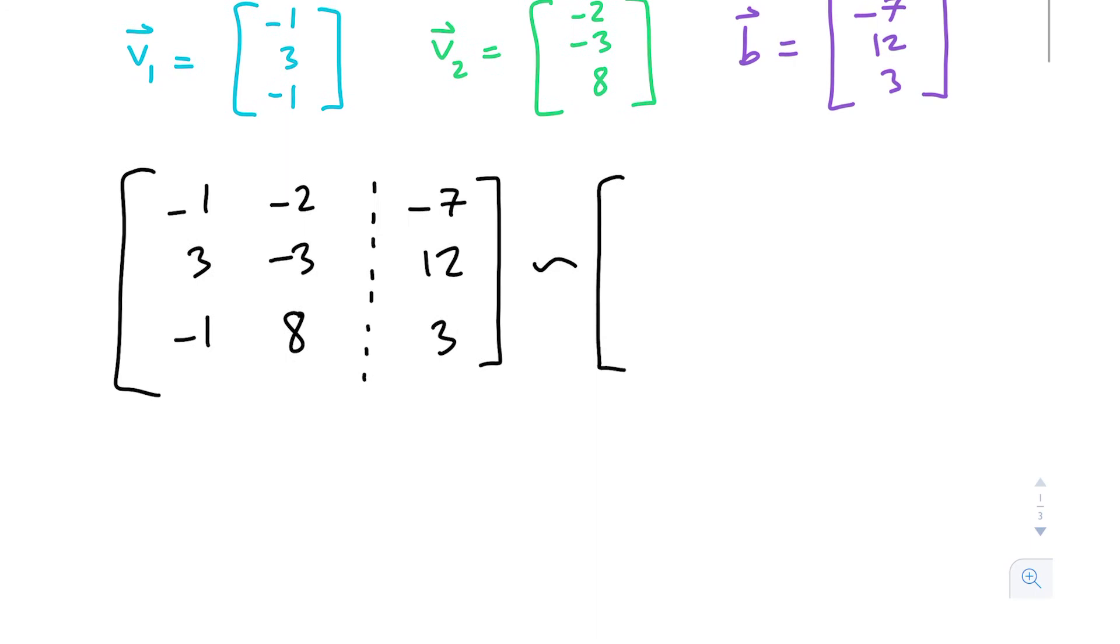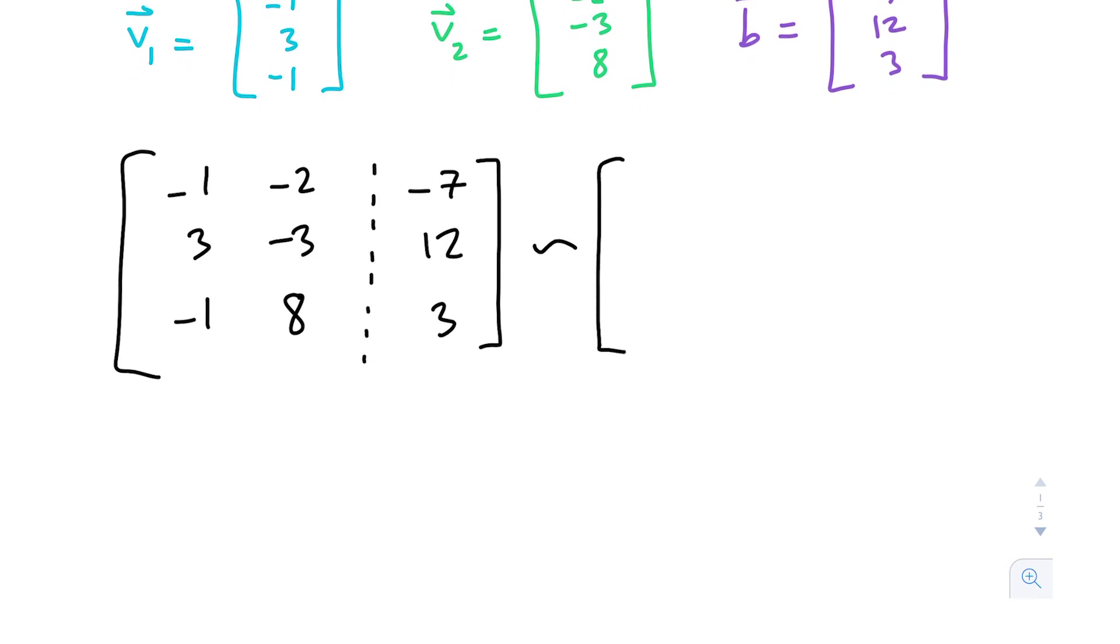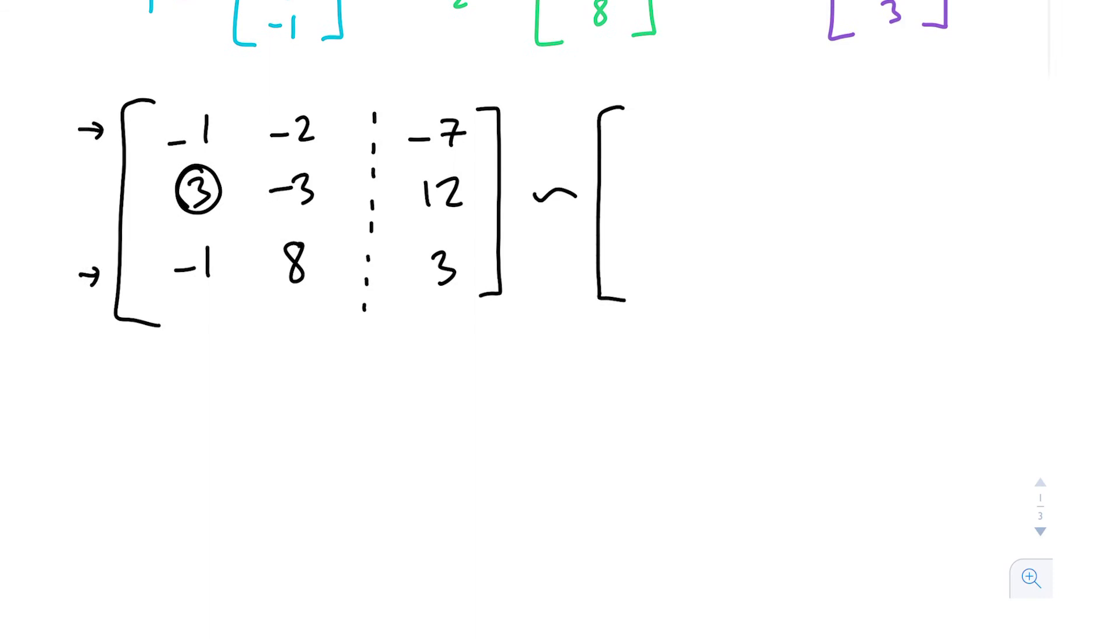Right off the bat, I would see that we have this 3 here. So if we multiply row 3 or row 1 by 3, we can get rid of this leading 3. What I'm going to do is multiply by 3. All we really care about is this leading term. We want to cancel it out. If we multiply negative 1 by 3, and then we add that resulting vector to row 2, we'll get rid of that leading vector. So we get negative 3, 3 times 8 is 24, and then 3 times 3 is 9. Then we want to add that to row 2.